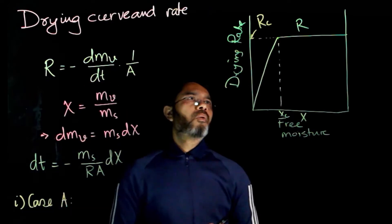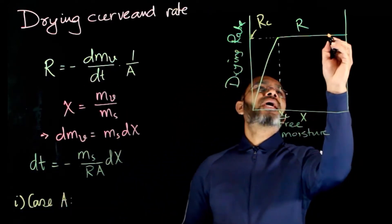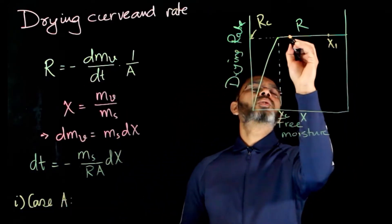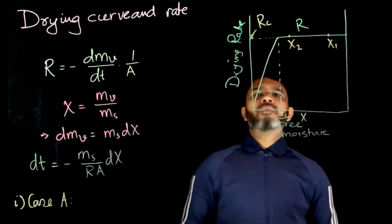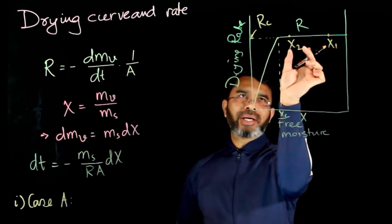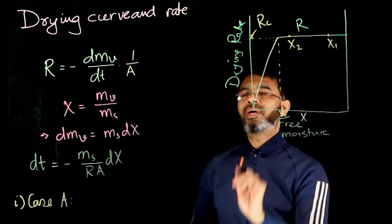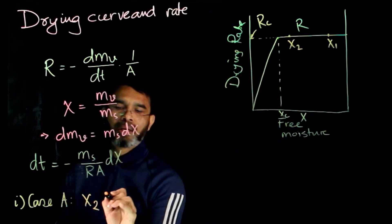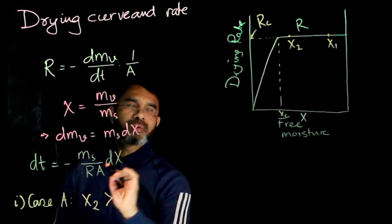Case A, we consider some values x1 and x2. We are drying this down to bring the moisture content from x1 to x2, where x2 is greater than xc.